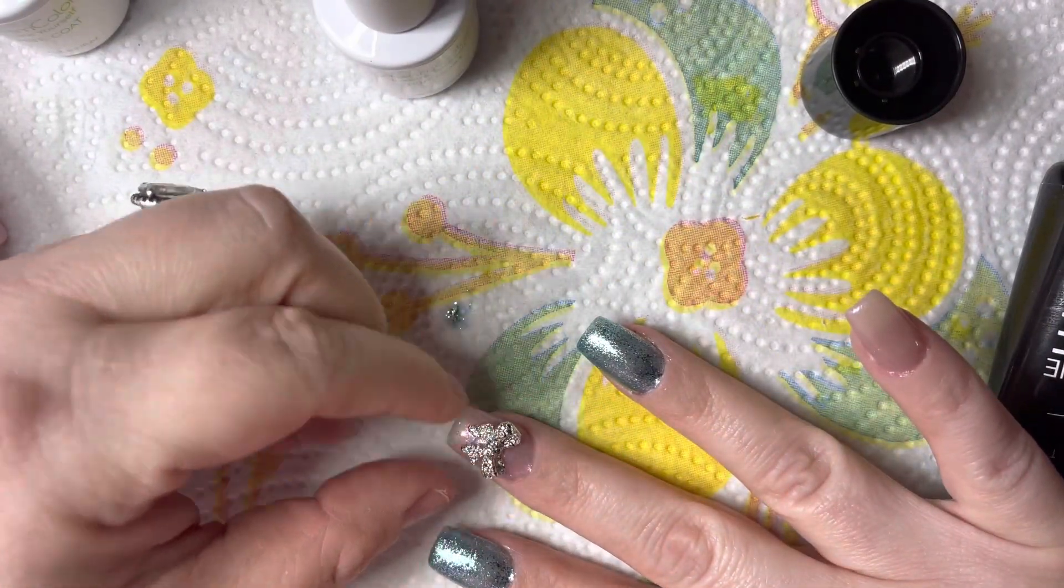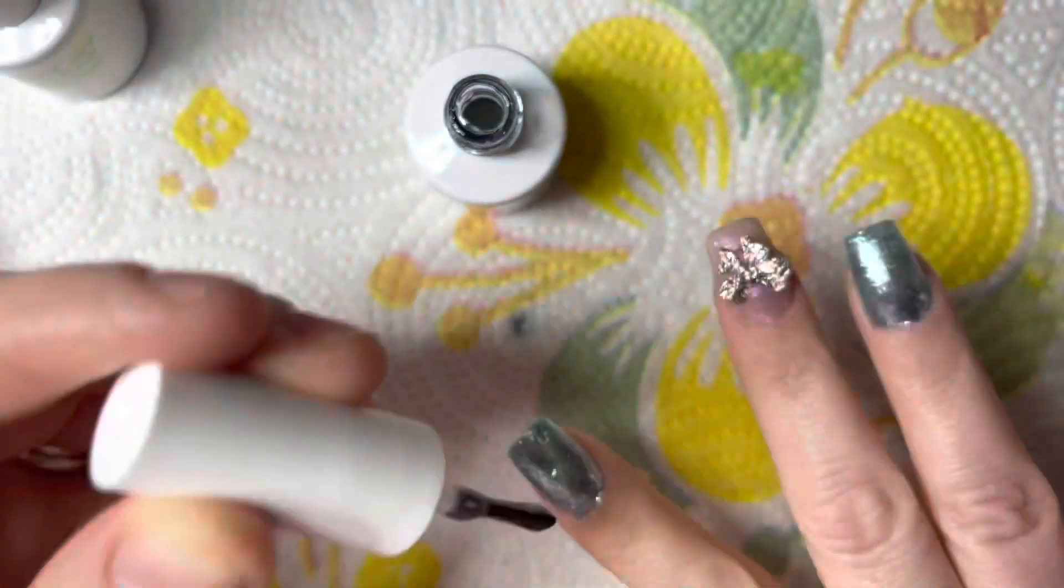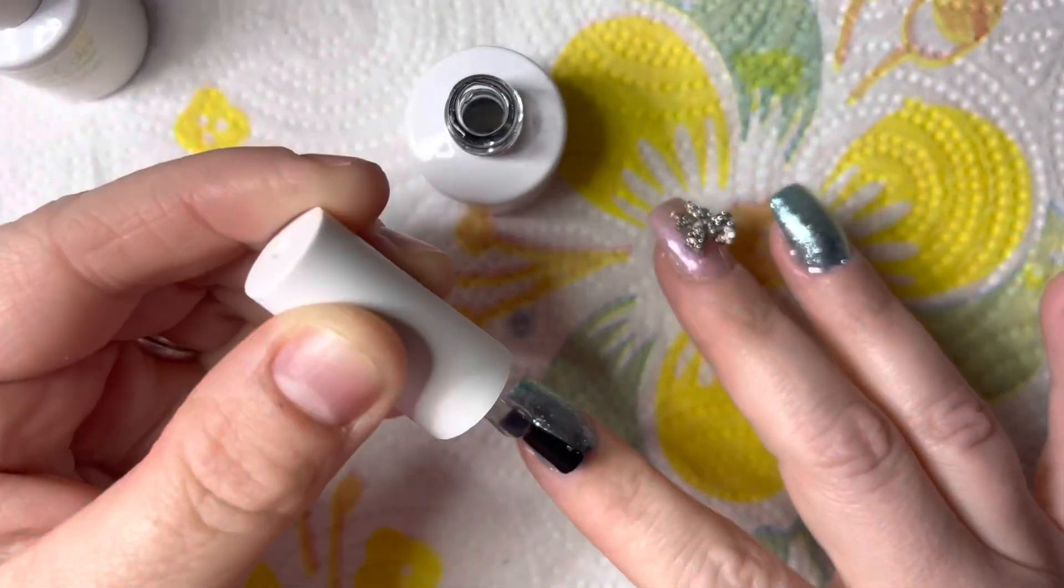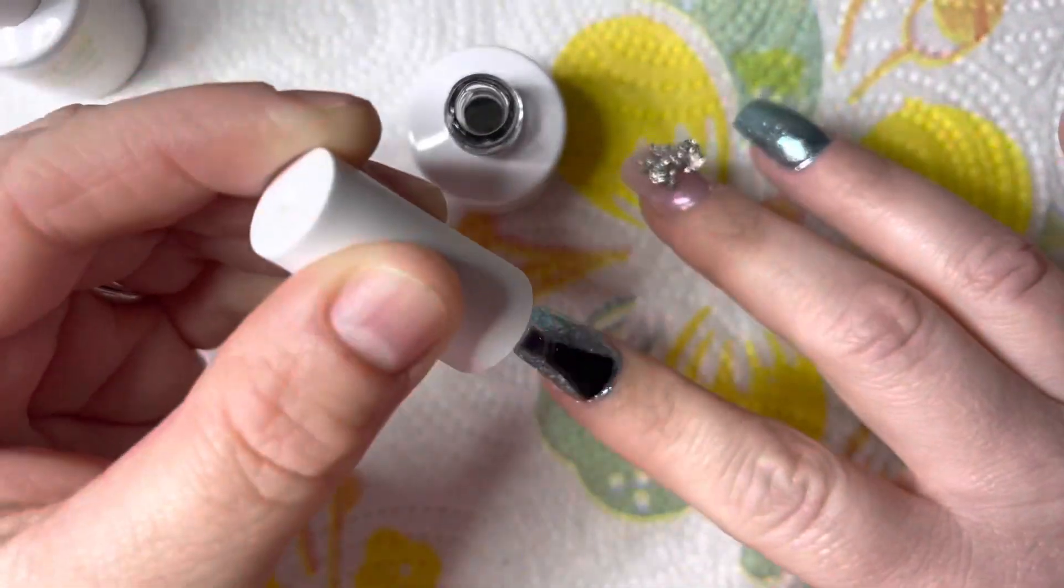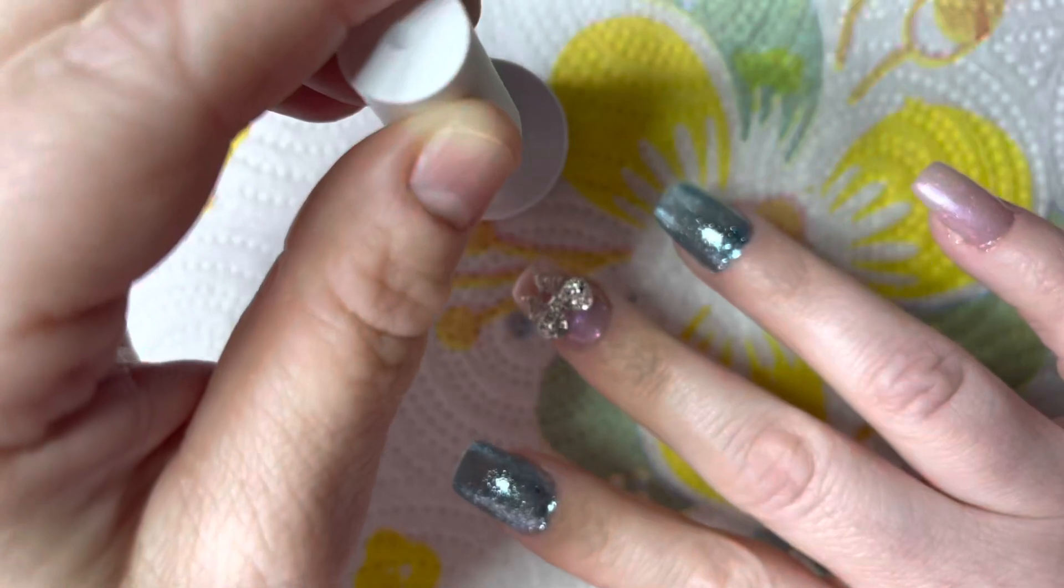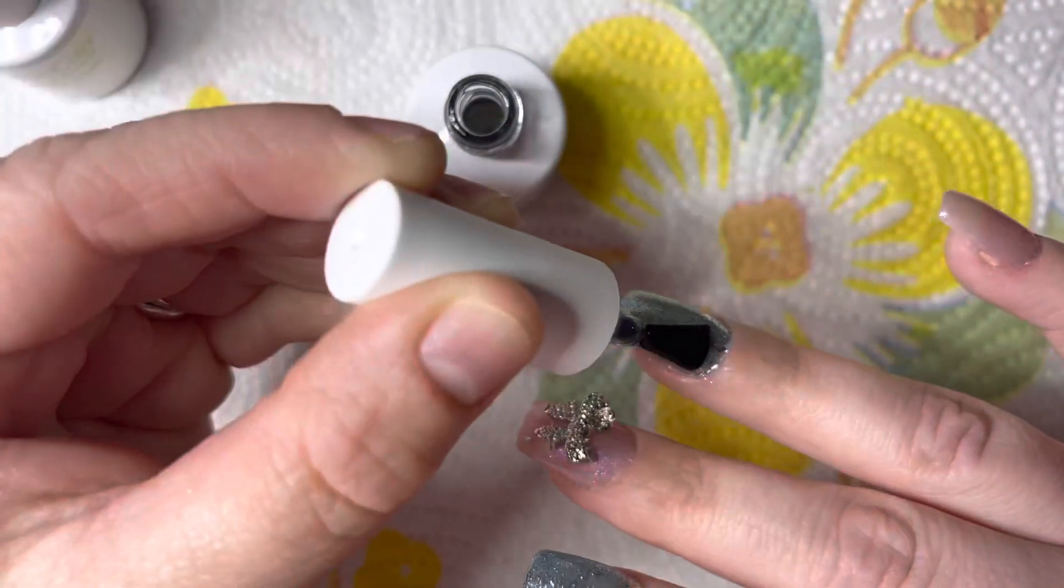So I used the McCart rhinestone glue. I'll see if I can leave that link down below. And now I'm just going in with the top coat to finish off these nails. And then we will come back to put on cuticle oil and give final thoughts.